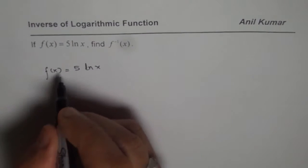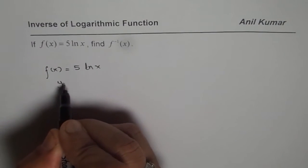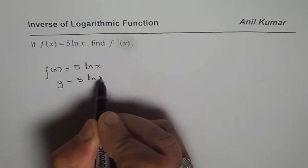To find inverse, let us write f of x as y, so we have y equals to 5 times ln x.